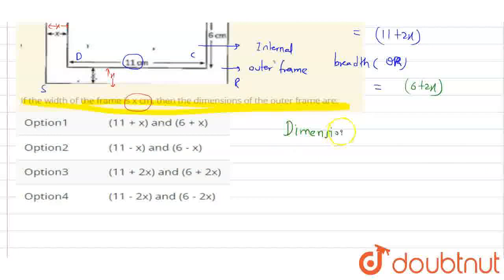The dimensions are 11 plus 2X and 6 plus 2X. 11 plus 2X and 6 plus 2X, option 3 is the available answer.